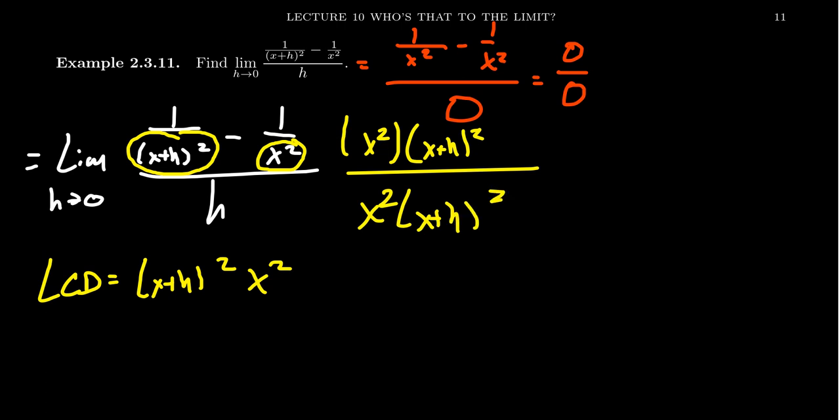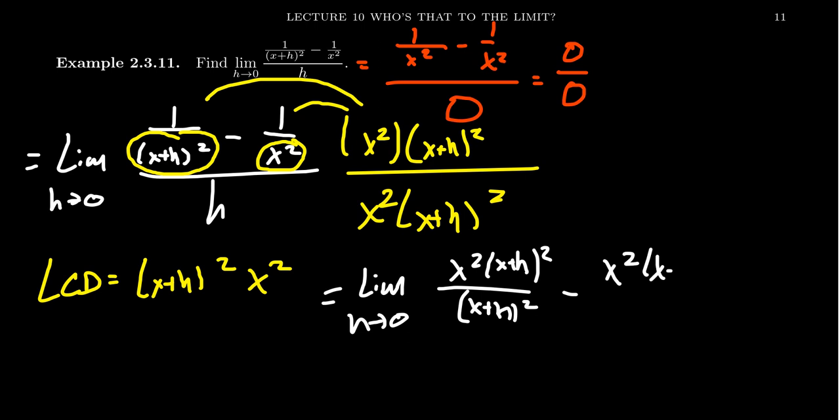Now in the numerator, because the numerator of the original fraction is a difference, we can distribute this onto both terms. That's really what we want to happen. So we're going to get the limit as h goes to zero. We're going to get x² over (x+h)² all over (x+h)². Subtract from that x² times (x+h)² over x². Now in the denominator of the mother fraction, you have h times x² times (x+h)².